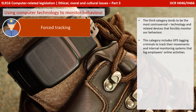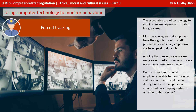The third category tends to be the most controversial: technology-related devices that forcibly monitor our behaviour. This can include GPS tagging criminals to track their movements and internal monitoring systems that log employees' online activities. The acceptable use of technology to monitor an employee's work habits is a grey area. Most people would agree that employers have the right to monitor staff productivity — after all, employees are being paid to do a job. A policy preventing employees from using social media during work hours is considered reasonable. But should employers be able to monitor what staff post on social media during breaks, or read personal emails sent via company systems, or is that a step too far?